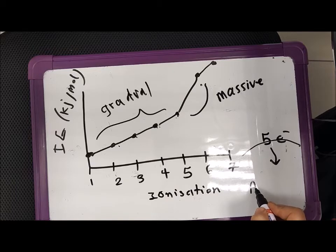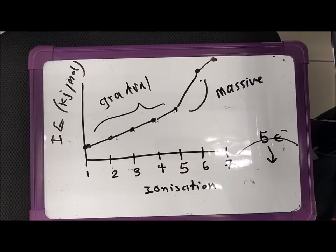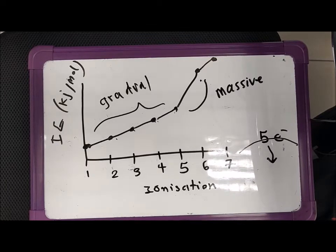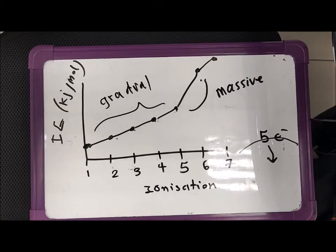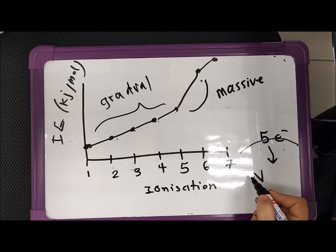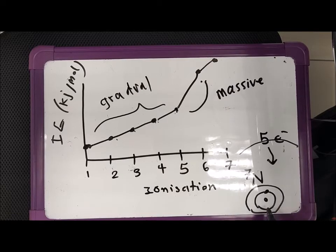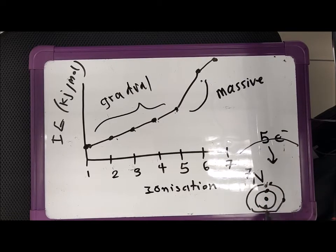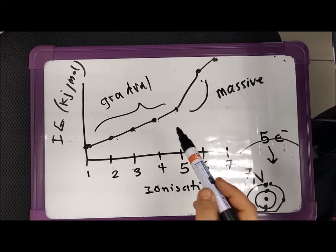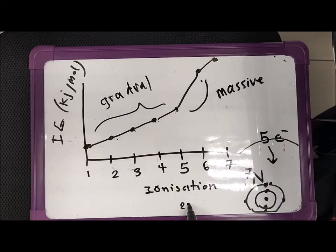What we can understand from this is that the element can be easily guessed if you look at the periodic table. For example, if the element is in the second period, it means the atom can be nitrogen because it has 7 electrons with electron configuration 1s2, 2s2, 2p3, giving 5 electrons in the outermost shell. Since it is in the second period, it should be nitrogen with 7 electrons.